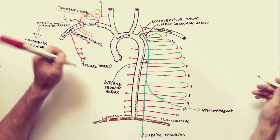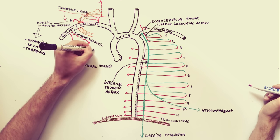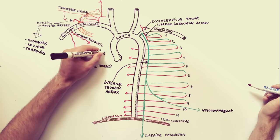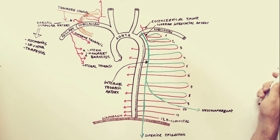The lateral thoracic artery, or the external mammary artery, is a blood vessel that supplies the lateral structures of the thoracic wall and breast. It supplies the serratus anterior muscle and the pectoralis major.